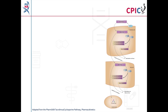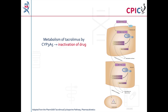Tacrolimus is an immunosuppressant used following solid organ and hematopoietic stem cell transplantation. It is metabolized in the intestine and liver by CYP3A4 and CYP3A5. This metabolism inactivates tacrolimus.